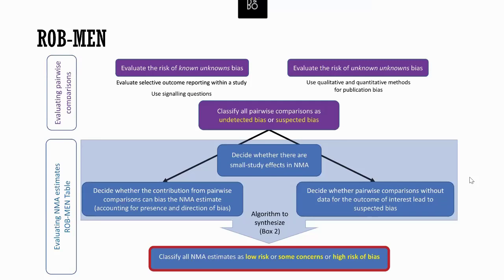Our tool's process is described in this flowchart. It can be seen as a two-stage process. The first part is to evaluate the risk of bias in the pairwise comparisons, and we consider all possible pairwise comparisons that can be made among the interventions in the network.